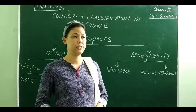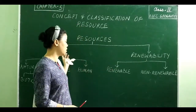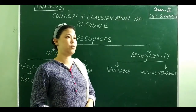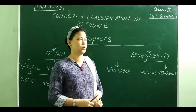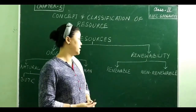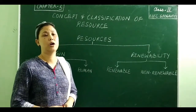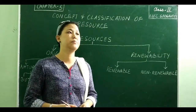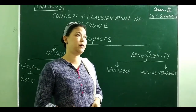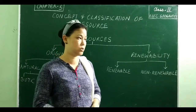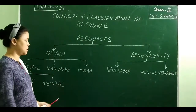We know that resources are large in number and varied in quality. Depending on origin — the place from where resources are extracted or found so that they can be used — resources can be classified into three different types: natural, man-made, and human.